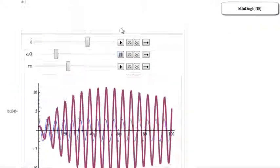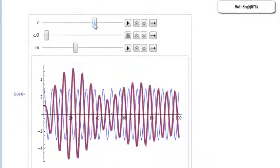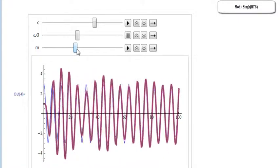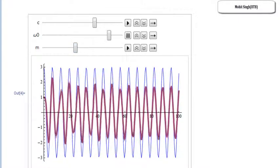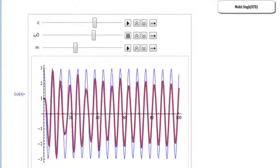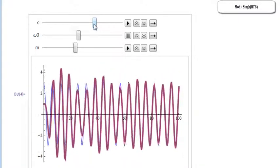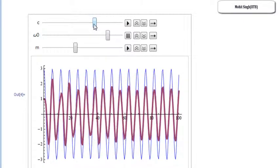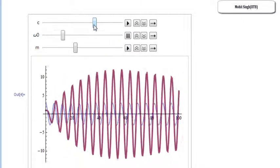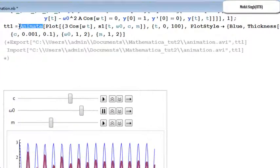So the basic drawback of this animate command is that you cannot see at what value of C you are stopping, at what value of M you are stopping. While the manipulate command will give the value and you can stop it at desired value and you can forward it by desired interval. So that is the beauty of this manipulate command.